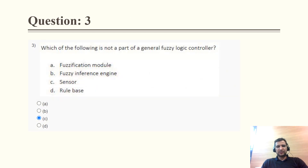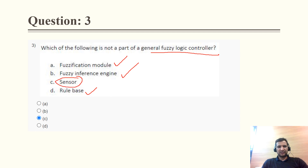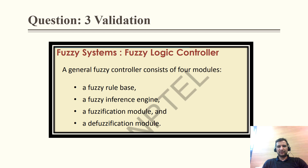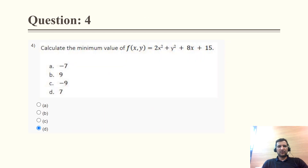Question 3: Which of the following is not a part of the general fuzzy logic controller? As we know, there are four parts: fuzzification, defuzzification, rule base, and inference engine. In the options, fuzzification, fuzzy inference engine, and rule base are present, but a sensor module is also listed — and that is not a part of the general fuzzy logic controller. So the correct answer is C.